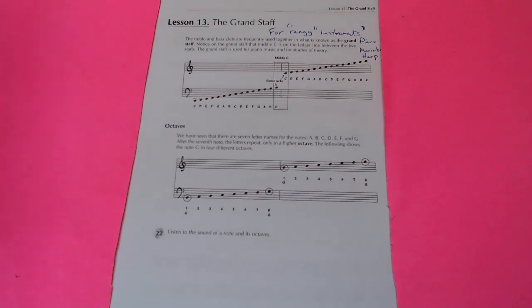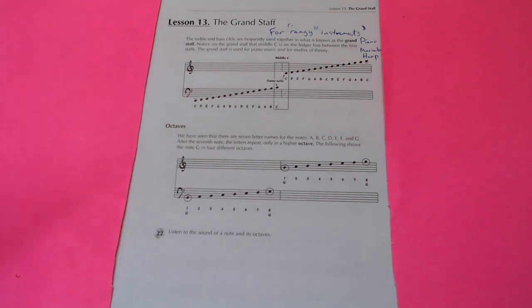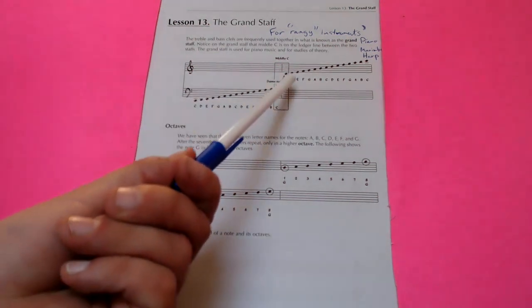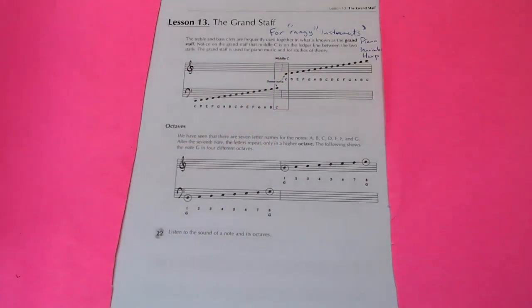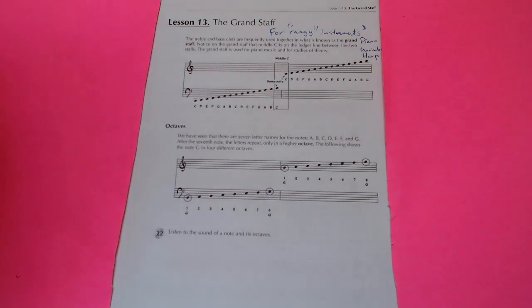We learned all the notes of the bass clef and all the notes of the treble clef. So most of this is review, except for this one note right here. This note right here and this note right here are exactly the same note. So when you see that note written in a grand staff, it's the same note. It sounds exactly the same. Just because there's a gap between the two notes does not mean they're a different note.